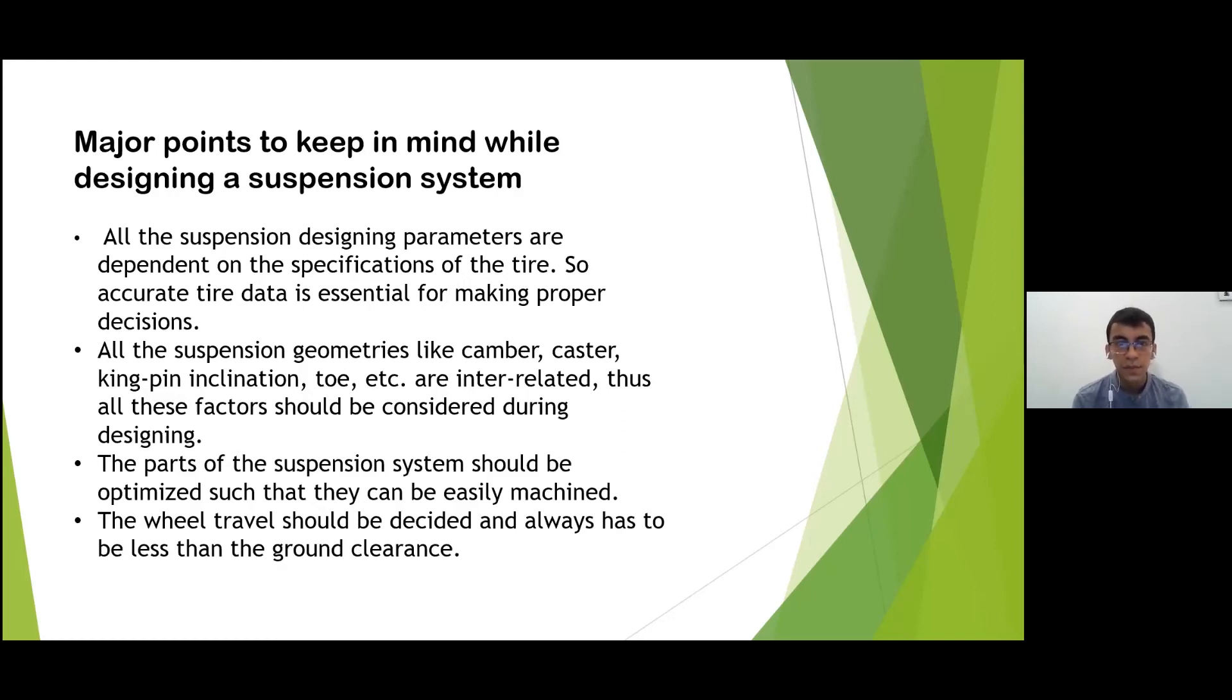And second we need to understand that camber, caster and kingpin inclination, toe, all the suspension geometries are interrelated and any change in these parameters can change all the other parameters. So all the factors should be taken into consideration while designing a suspension system.